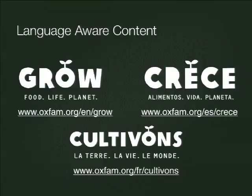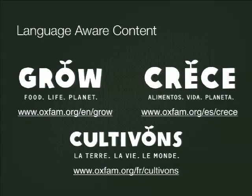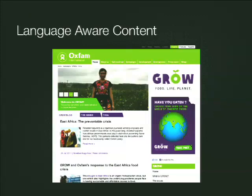The second public website example concerns language-aware content. The Grow campaign - about food and food security - is our biggest current campaign. As a result of its high profile, it has its own brand: a different logo from the current Oxfam logos, a unique color palette, and very unique materials generated per country and per language across our three public languages. We use three key Drupal modules for this: Spaces, Features, and Context.